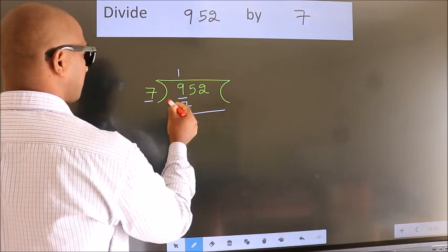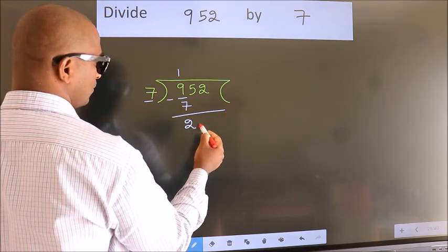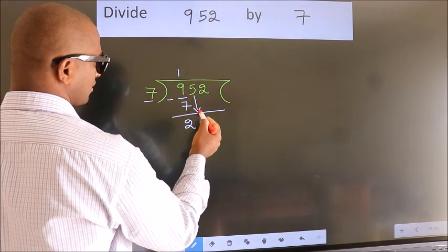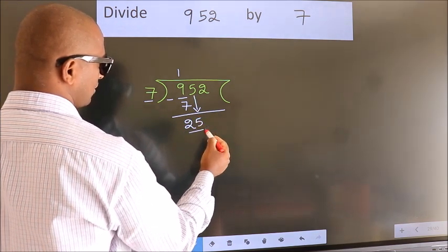Now we should subtract. We get 2. After this bring down the beside number. So 5 down. So 25.